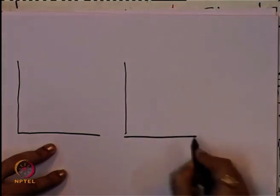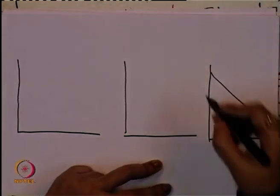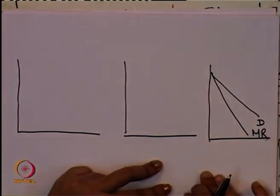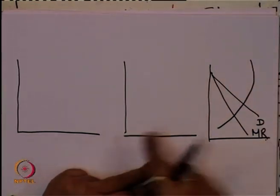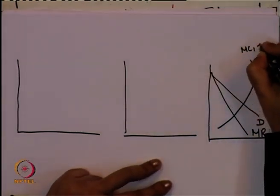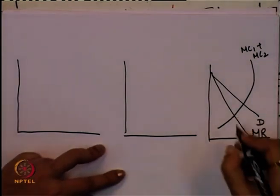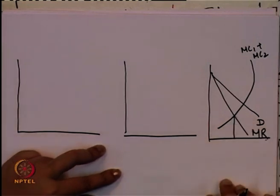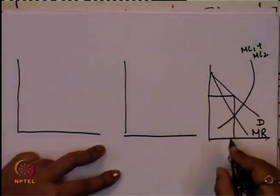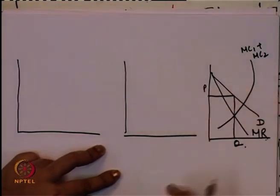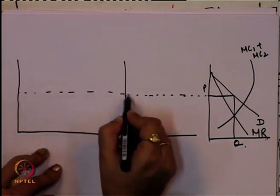We take a case of a duopoly to make it simple. This is the demand curve and this is the marginal revenue curve for the entire market — the summation of all marginal revenue curves. This is the marginal cost function, which is the summation of marginal cost 1 and marginal cost 2. The price is determined at the point where marginal cost equals marginal revenue, giving equilibrium output Q and equilibrium price P. This price P is followed by both firms.